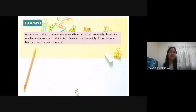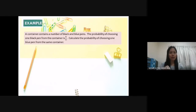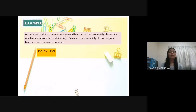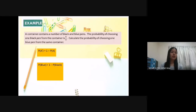Example: A container contains a number of black and blue pens. The probability of choosing one black pen from the container is four over five. Calculate the probability of choosing one blue pen from the same container. Using the formula P(A') = 1 − P(A), the probability of choosing one blue pen equals one minus four over five, which equals one over five.